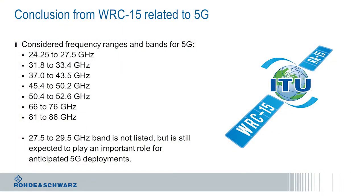At WRC 15, a general decision was taken to analyze the frequency range between 24 and 86 GHz until the next conference. The study shall provide the necessary information to allow for a decision on additional spectrum by that time. More precisely, the listed frequency bands in this slide were identified to be studied for future 5G communication. Notably, no bands between 6 and 24 GHz are identified. And also interestingly, the 28 GHz band, a frequency that some early prototypes are utilizing, isn't part of that list.